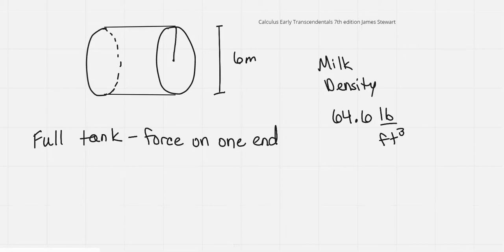Here we have a cylindrical tank that's on its side and it's full of milk. The entire tank is full of milk, which has a density of 64.6 pounds per cubic foot, and we want to find the force on one end. We're given that the diameter is 6 feet.